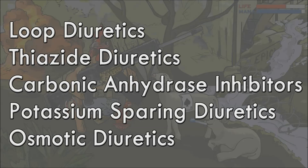There are five classes of diuretics that our visual mnemonic describes: loop diuretics, thiazide diuretics, carbonic anhydrase inhibitors, potassium-sparing diuretics, and osmotic diuretics.